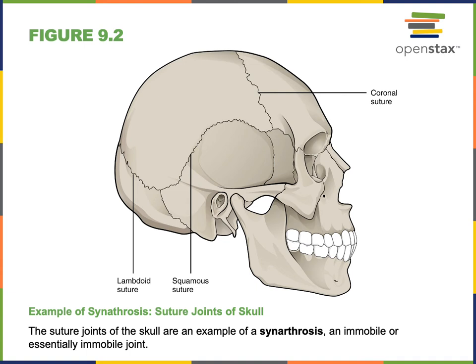A synarthrosis is a functional classification of articulations where there is no motion at that joint — it's an immobile articulation. A few examples include the coronal suture between the frontal bone and the parietal bone, the squamous suture between the parietal bone and the temporal bone, and the lambdoid suture between the occipital bone and the parietal bone.